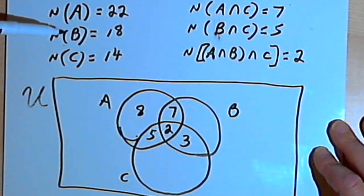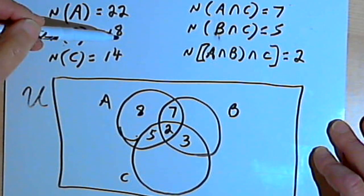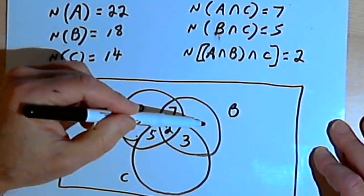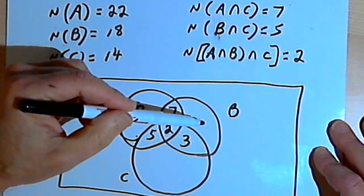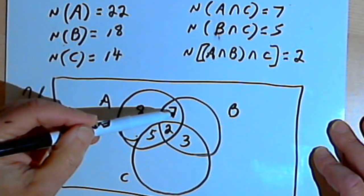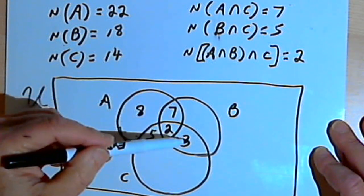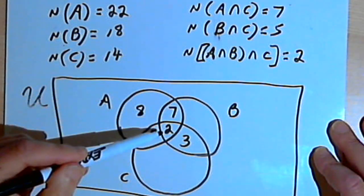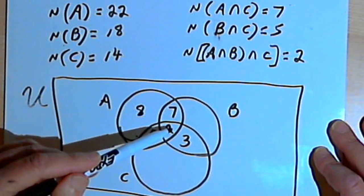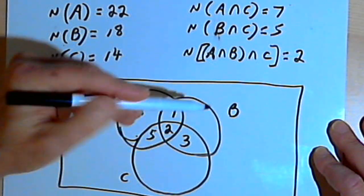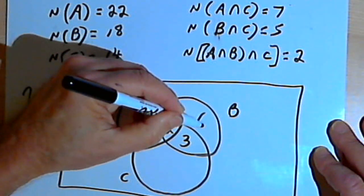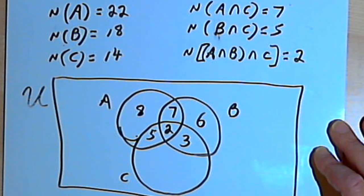I've got a total of 18 students taking biology, and I've already accounted for 7 and 3 is 10, and 2 is 12 — so 12 of them. There are 18 altogether, so there are 6 left who are taking only biology.